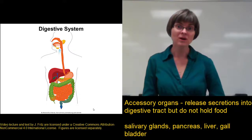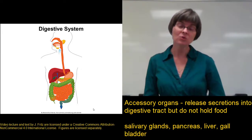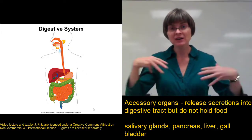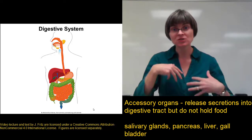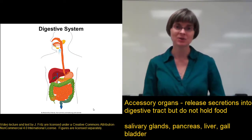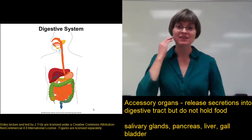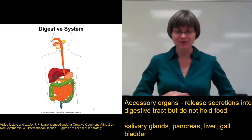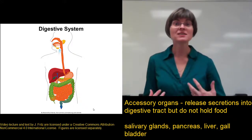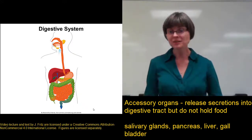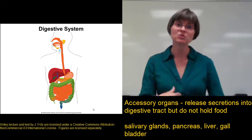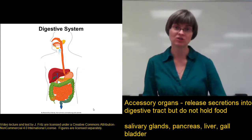The accessory organs of the digestive system are those organs that are necessary for digestive system function, and they supply secretions and enzymes to the digestive tract, but food doesn't actually pass through the accessory organs. These would be things like the salivary glands, the liver, the pancreas, and the gallbladder. Food doesn't pass through them, but they do release secretions into the digestive tract to help with digestion of food.